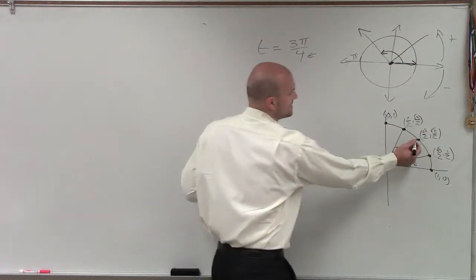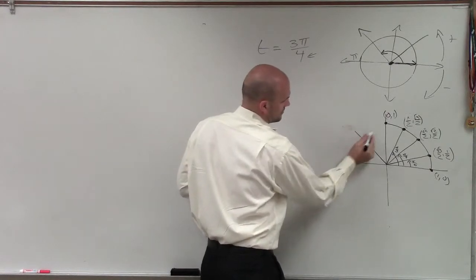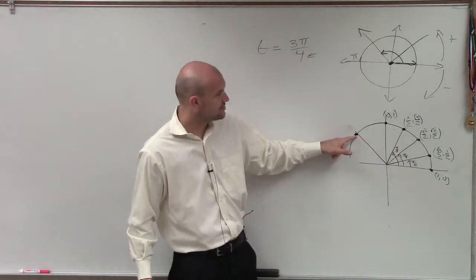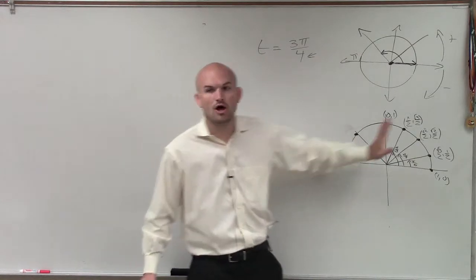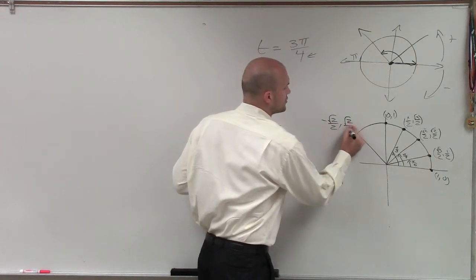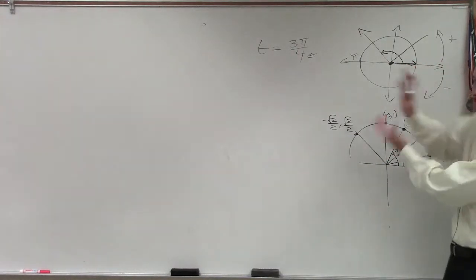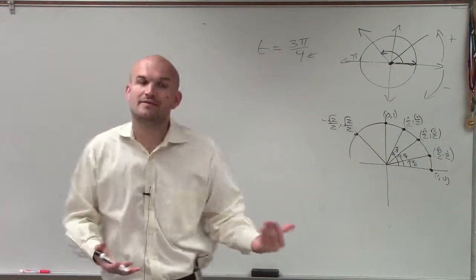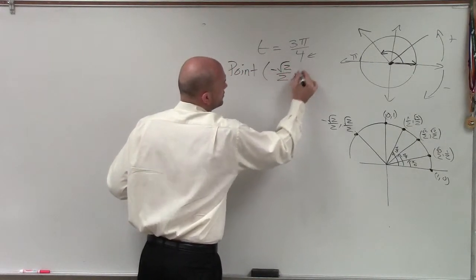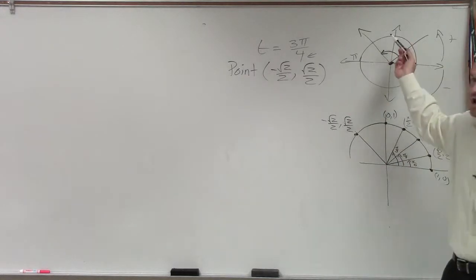So I'm not at pi fourths, but now I'm at 3 pi over 4. If this is pi fourths, 2 pi fourths, 3 pi fourths — how is this point related to that point? All it is, ladies and gentlemen, is just a reflection over the y-axis. So therefore this is negative square root of 2 over 2, comma square root of 2 over 2. In the second quadrant, the x-coordinates are negative. That's why I told you to first know how to graph it and sketch it, then find the point.